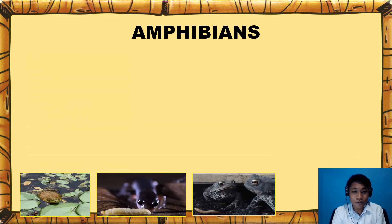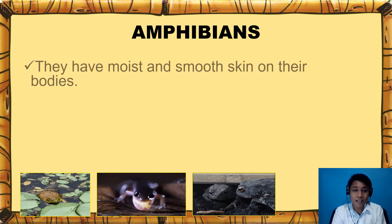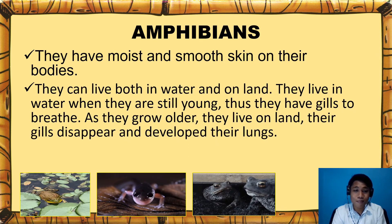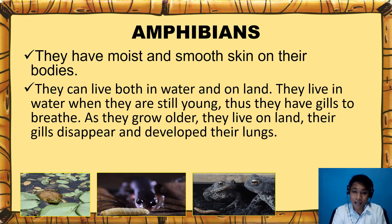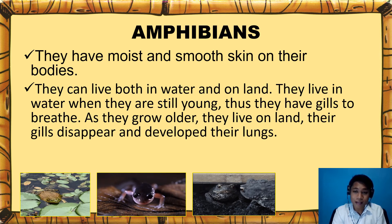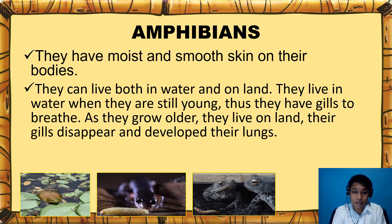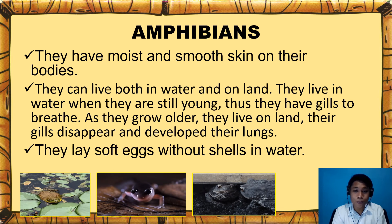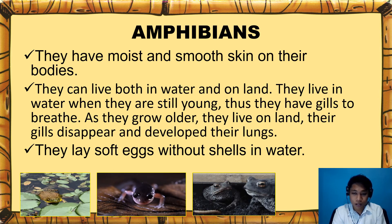Always remember that amphibians have moist and smooth skin on their bodies. They can live both in water and on land. They live in water when they are still young, thus they have gills to breathe. As they grow older, they live on land, their gills disappear and they develop their lungs. And amphibians lay soft eggs without shells in water.